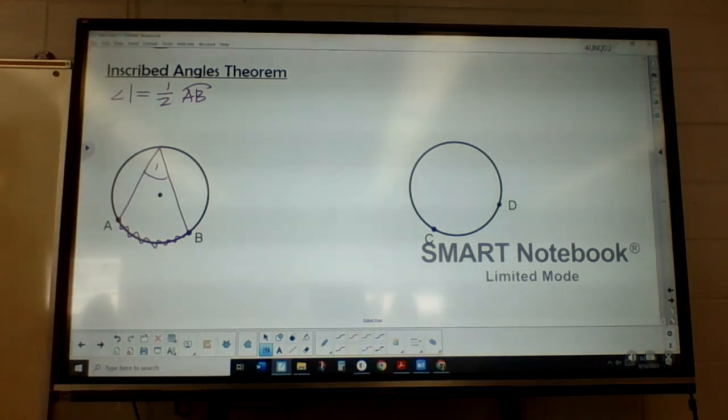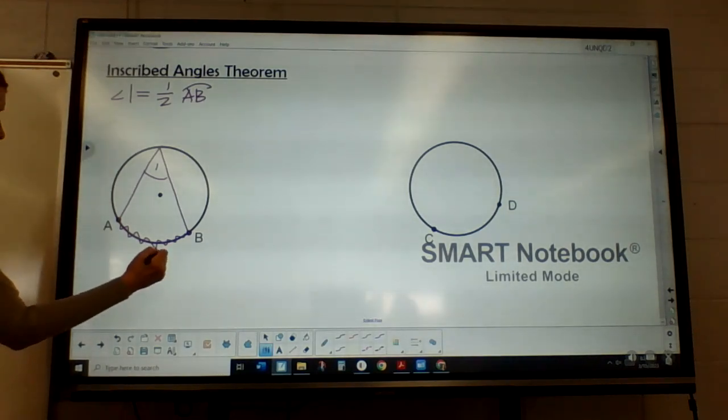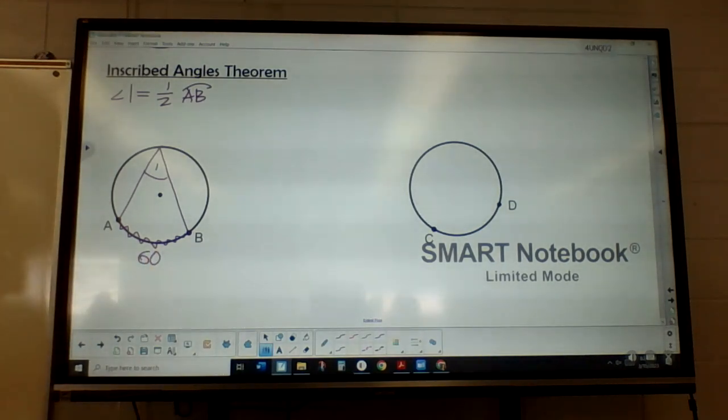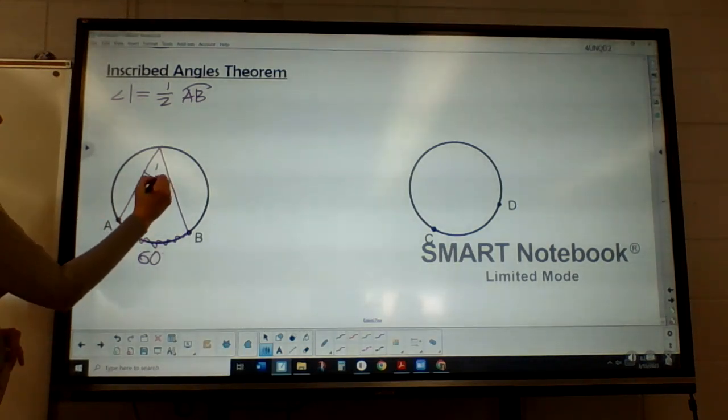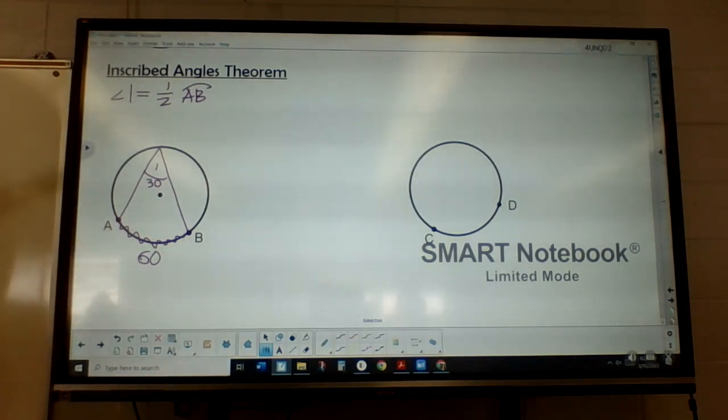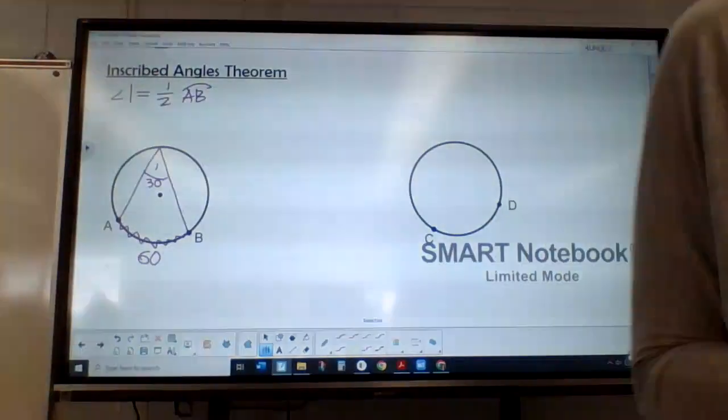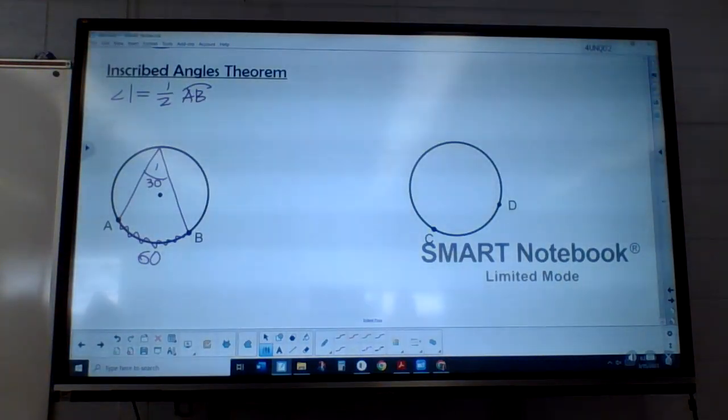So if I tell you that AB is 60 degrees, the measure of angle one would just be 30. Now, if it was a central angle, it would be that measure. It would be 60. But since it's not a central angle, and instead it's inscribed, it's just half of that value.